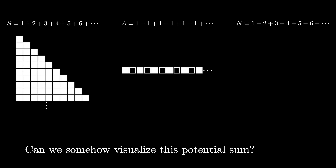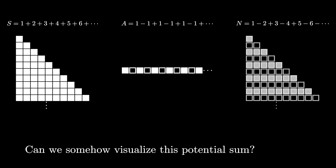The infinite sum A can then be represented by a line of squares where they alternate being filled and hollow — the first filled square represents 1, the first hollow square represents negative 1, and so on. Combining these two ideas, the infinite sum N can be represented by an infinite triangular array where the odd rows consist of filled squares for positive numbers and the even rows consist of hollow squares representing the negative numbers.